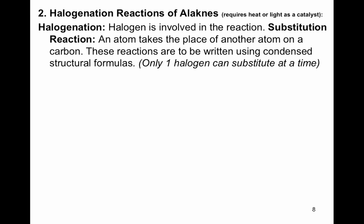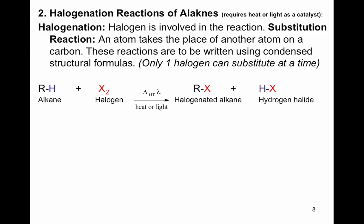Keep in mind that only one halogen can substitute at a time. In the general reaction, the R group can be any size. A hydrogen is explicitly shown since the substitution replaces a hydrogen. The halogens are diatomics, so the halogen must always have a subscript of two. Heat or light must be written over the arrow — you can use the words, the delta symbol for heat, or lambda for light — but you must show at least one of these, written over the arrow.